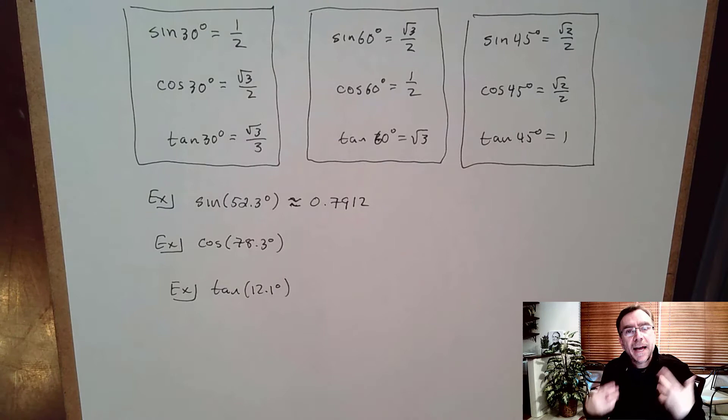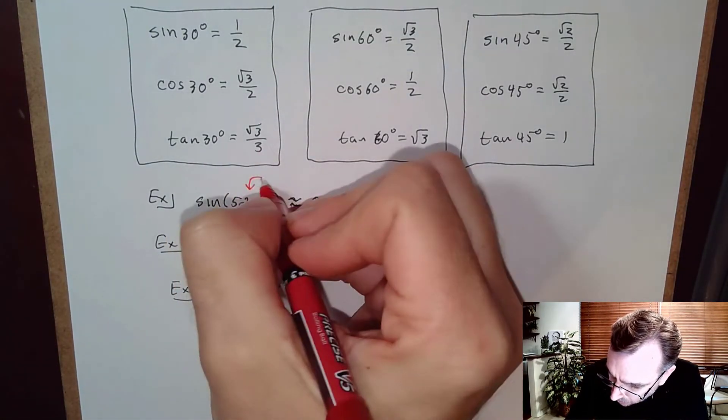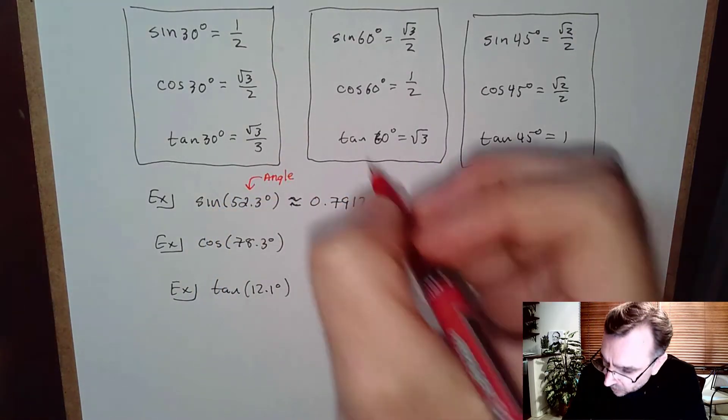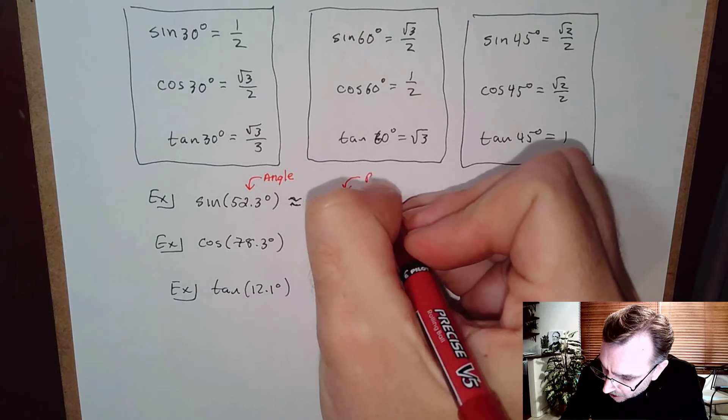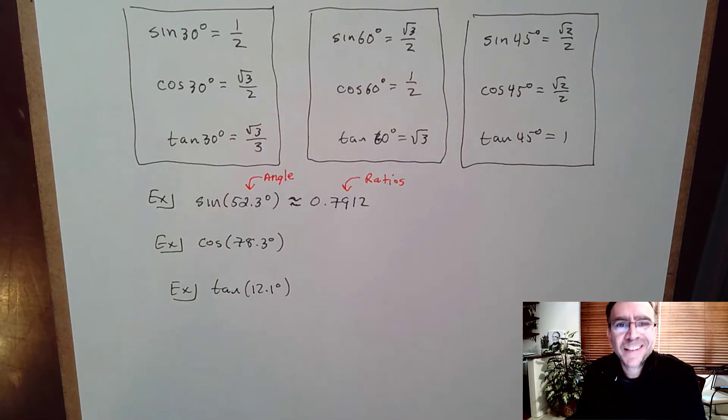The rule of thumb in our class and our textbook is to round decimal degree angles to one decimal place, and we're going to round ratios to four places. That's our class convention.